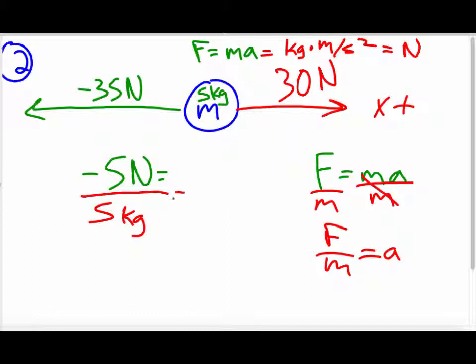So, what is this? Negative one meters per second squared. That's the acceleration. So this object is accelerating one meter per second in the negative direction. Does that make sense? Now to do problem number three.